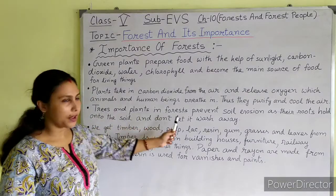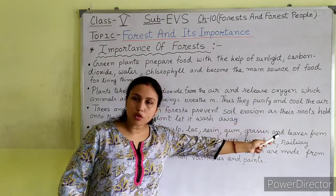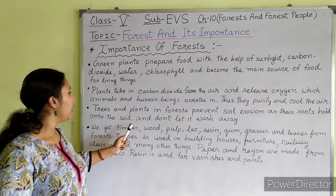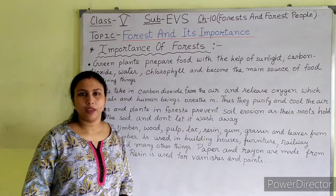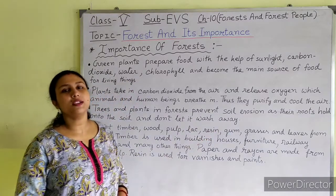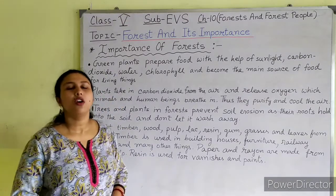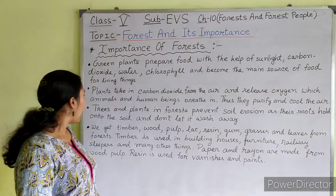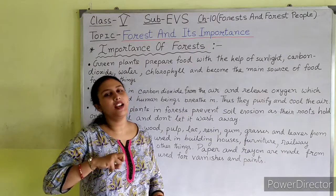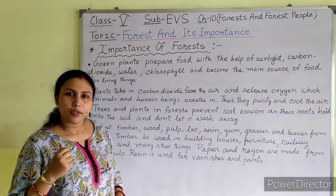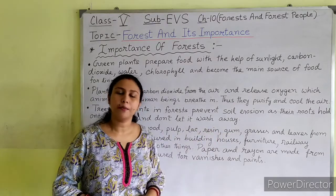Trees and plants in forests prevent soil erosion, as their roots hold onto the soil and don't let it wash out. Soil erosion means the removal of the top part of the soil by agents like wind or water. As the trees and plants hold the soil tightly with their roots, soil erosion is prevented.